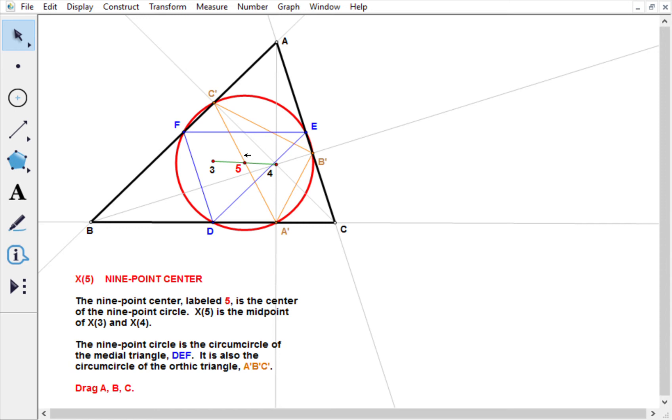But a more interesting way of defining it is that it's the center of the circle that passes through the three midpoints of the sides of the triangle. That circle is called the nine-point circle because it also passes through six other interesting points.